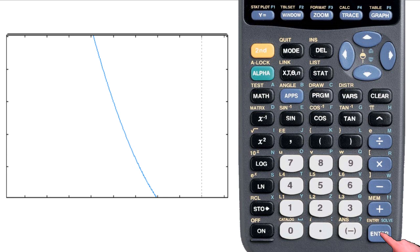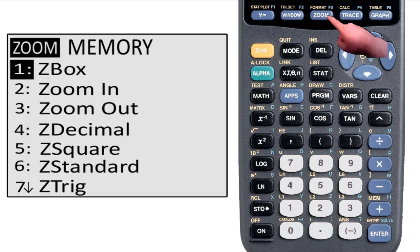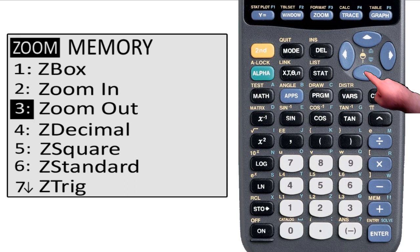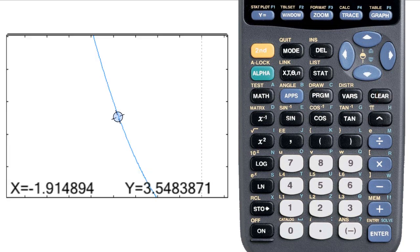Now let's zoom out. It works exactly the same way. I hit zoom, go to zoom out and it brings me back to the graph and I have control over cursor. I select where I want to zoom out from, hit enter and I zoom out.